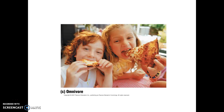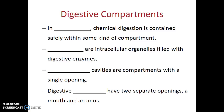Some humans may choose to live as herbivores, primarily consuming plant material, and our digestive system is okay with that. However, we also clearly have teeth and a digestive system that allows for the consumption of meat. In animals, chemical digestion is contained safely within some kind of compartment, because digestive enzymes are potentially very dangerous to us — they could break down the types of molecules that we are made of.